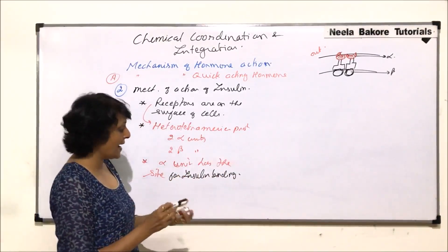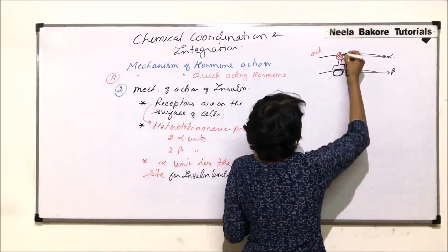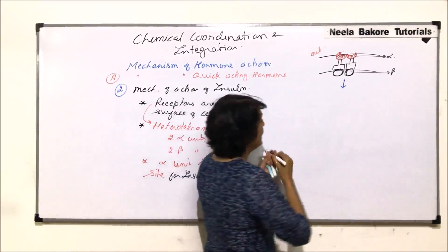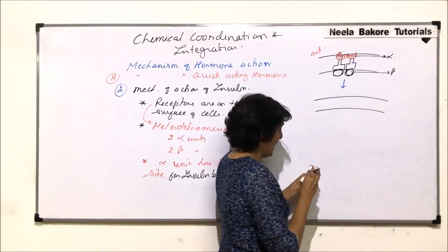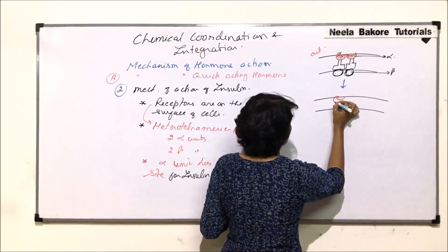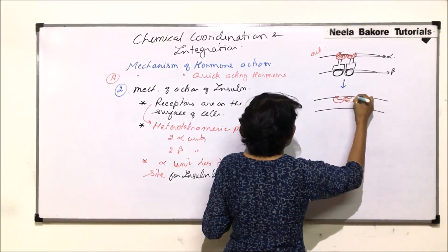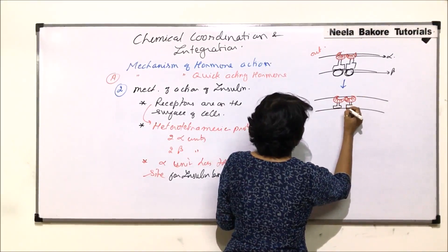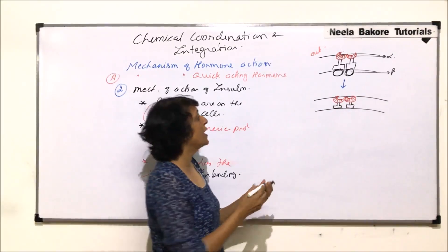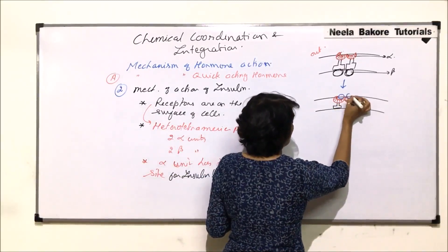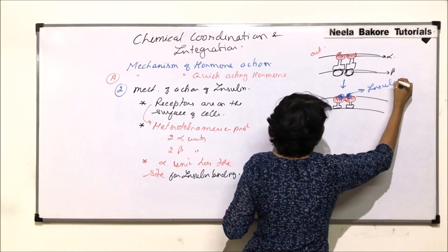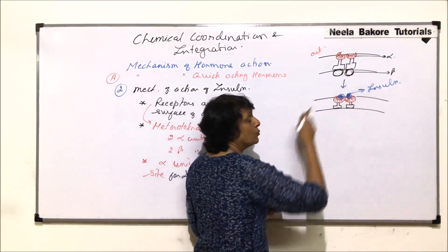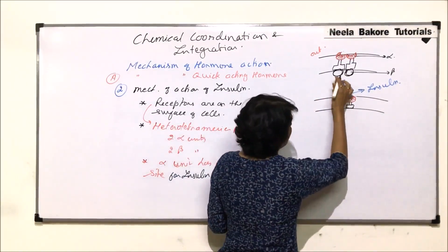When insulin is released, it binds to the alpha unit binding site. Let us draw this diagram again — the two alpha units on the outer side and the beta units on the cytoplasmic side. Insulin comes and binds to the alpha unit.